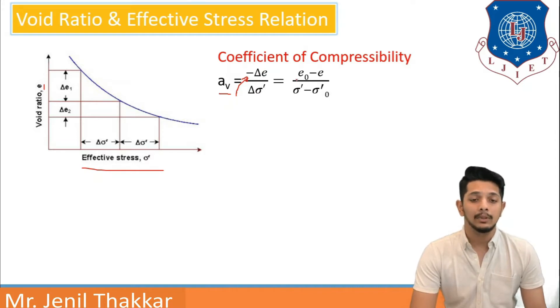Here, delta E can be written as E0 minus E. E0 is initial void ratio and E is final void ratio by delta sigma dash. Sigma dash minus sigma zero dash. Sigma dash is final effective pressure. Sigma zero dash is initial effective pressure.